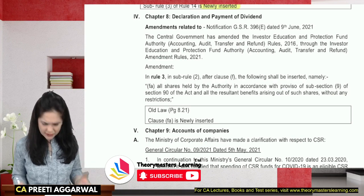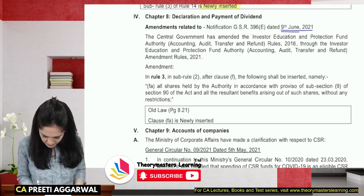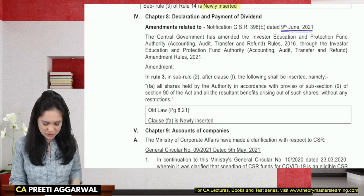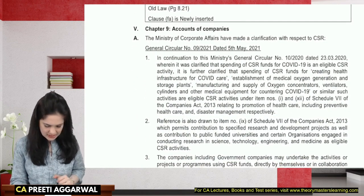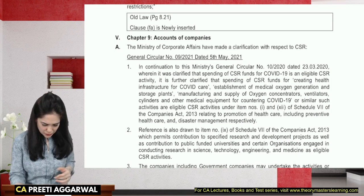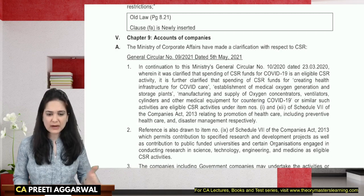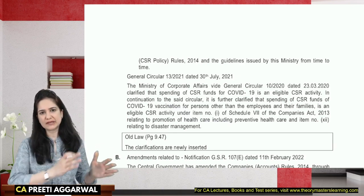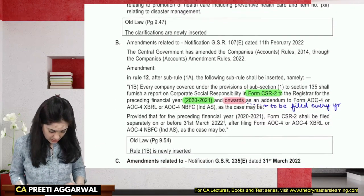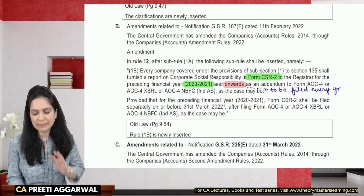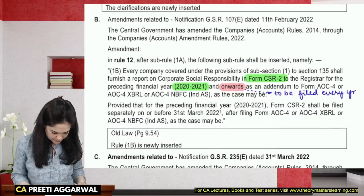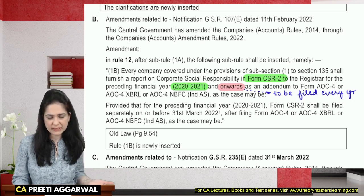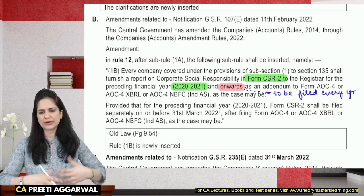There is also an amendment in declaration and payment of dividend, but this is an old amendment applicable to the May 22 attempt as well — you can watch the earlier video for that. Next, regarding the amendment from accounts of companies: the first part is not very important for the exam and was already discussed in May 22, so let's jump to the 'b' part of this amendment. There are very small amendments here which may not be asked in a theory question but could be asked as an MCQ or a correct/incorrect question.